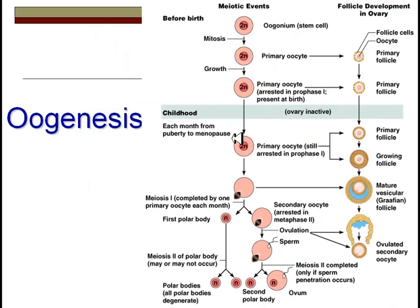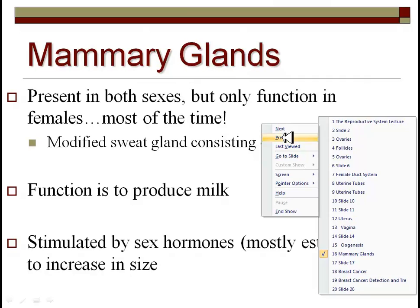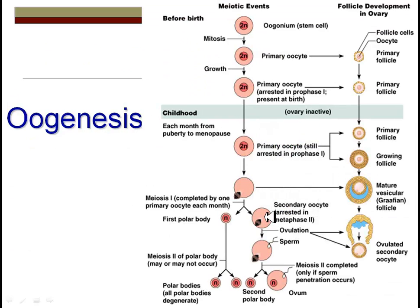Oogenesis is the production of an egg. Just like in males, we begin with 46 chromosomes and go through two divisions of meiosis, which begins activating during puberty, producing haploid cells. What's different in females is that you end up with one really large egg and three polar bodies. Meiosis doesn't always complete for the first polar body, but you still end with four cells — three of which serve no reproductive function. The follicle stages we discussed in the ovary correspond to around day 14, with the corpus luteum following.